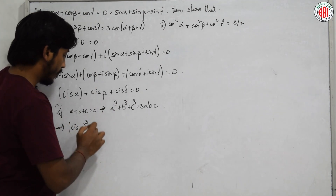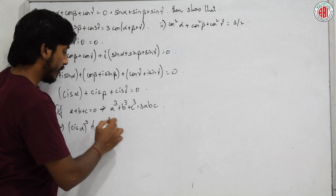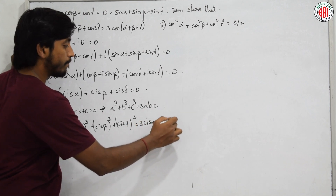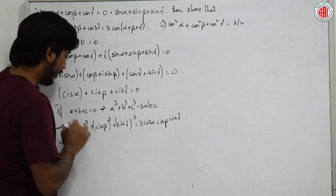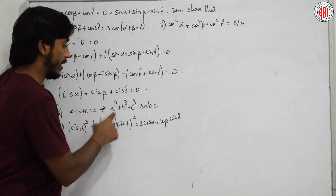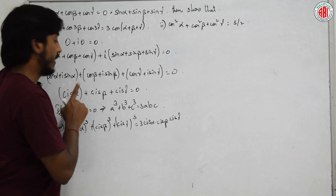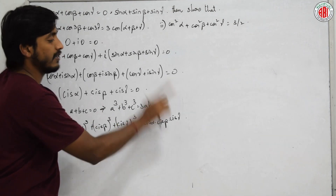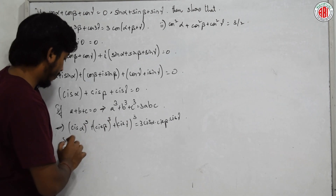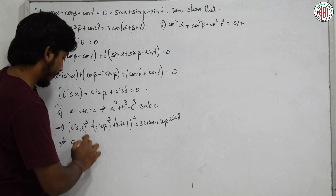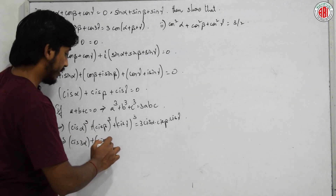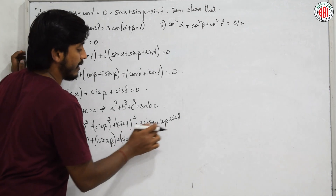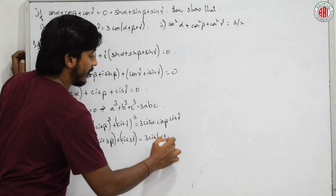This gives cis³α + cis³β + cis³γ = 3 · cis α · cis β · cis γ. Since cis^n θ = cis(nθ), the left side becomes cis(3α) + cis(3β) + cis(3γ). The product cis α · cis β · cis γ = cis(α+β+γ), so the right side is 3 · cis(α+β+γ).